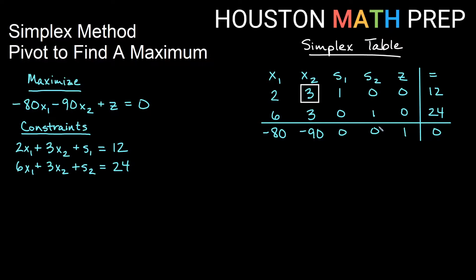Welcome back everyone to our last video explaining the simplex method. In the first video, we talked about what the simplex method is and how to set up the table. In our second video, we found the pivot. So now that we've found the pivot, we're going to teach you how to use it — we're going to actually pivot to find the maximum. We had this information that we turned into the simplex table and we found that our pivot was three. You can check out those videos if you need to see any of those details.